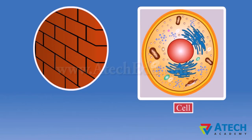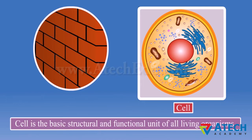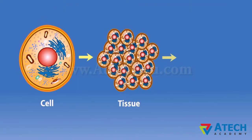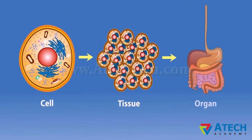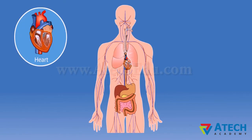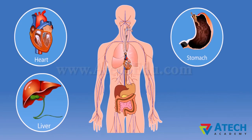Cell is the basic structural and functional unit of all living organisms. Cells together form tissues. Tissues combine to form an organ like the stomach, intestine, liver, and heart. These organs combine to form a living organism.